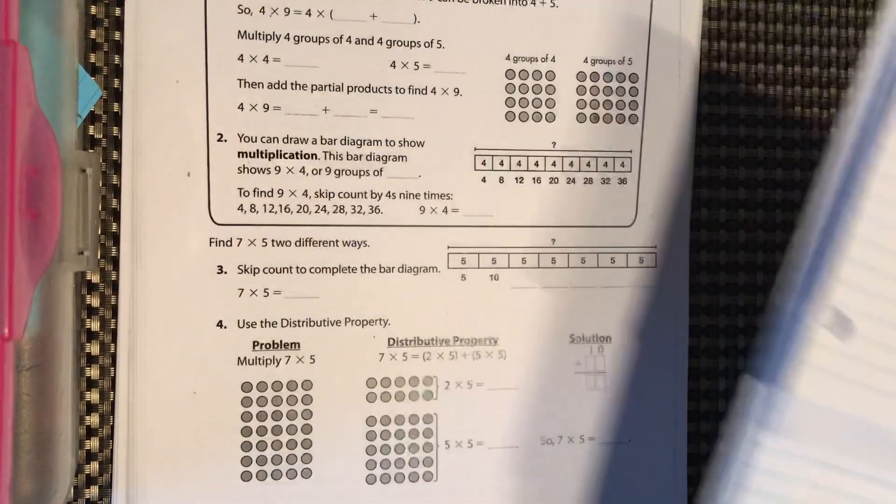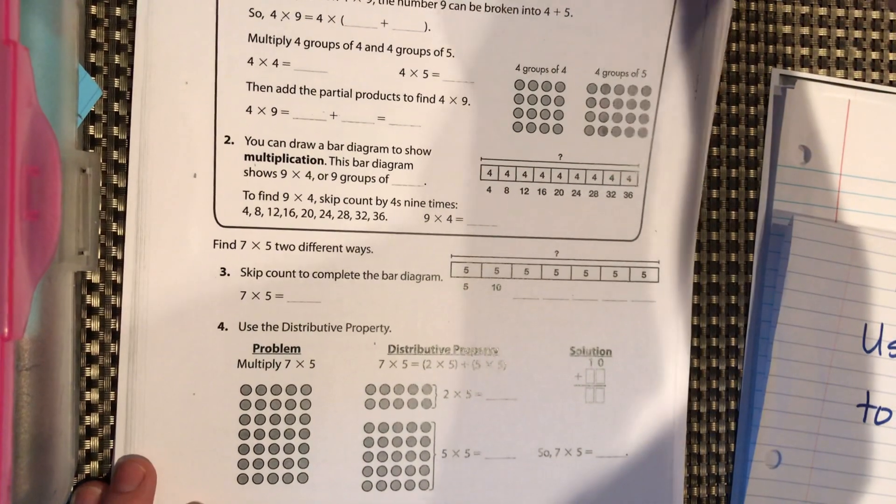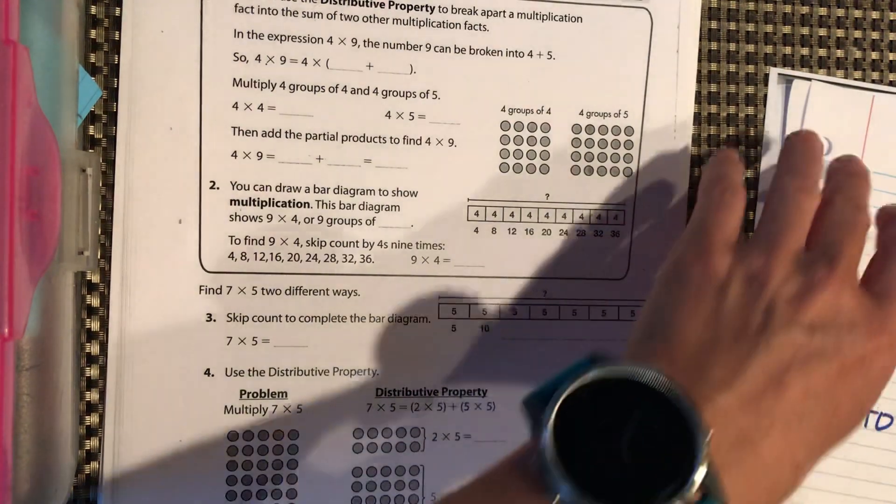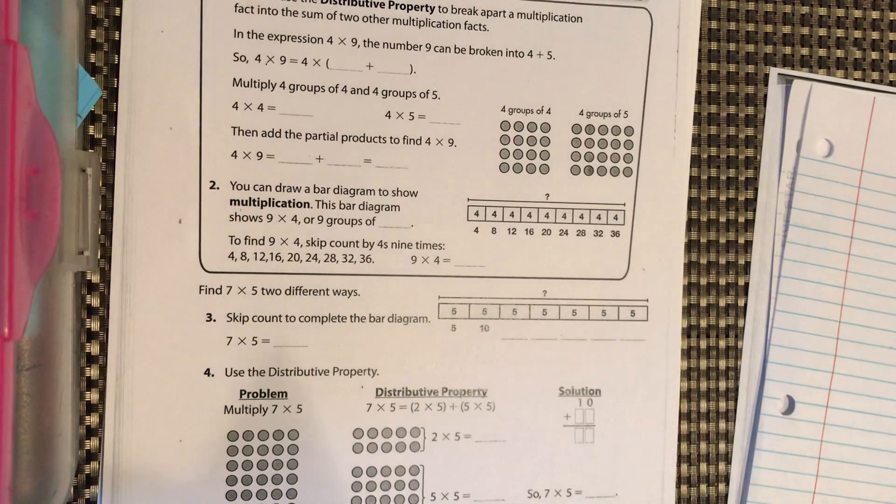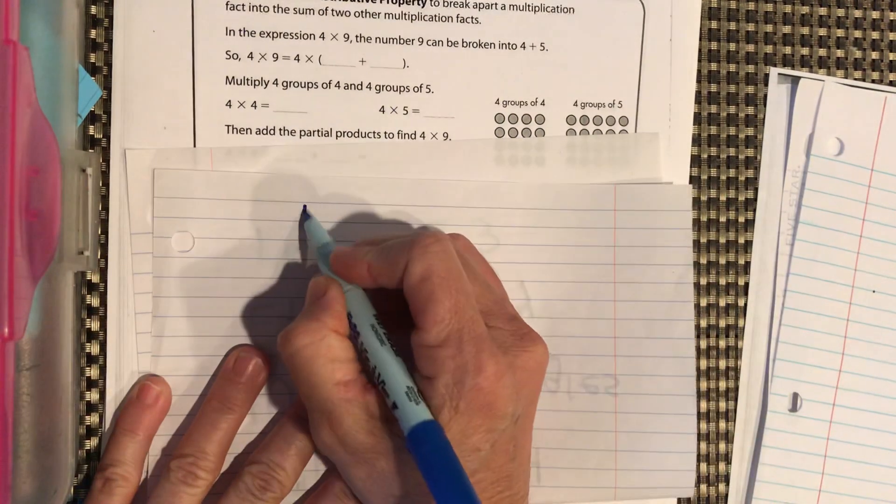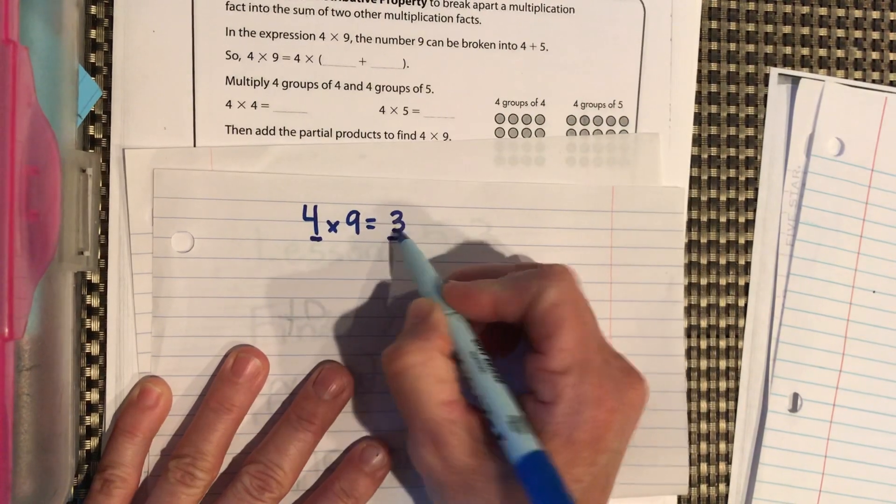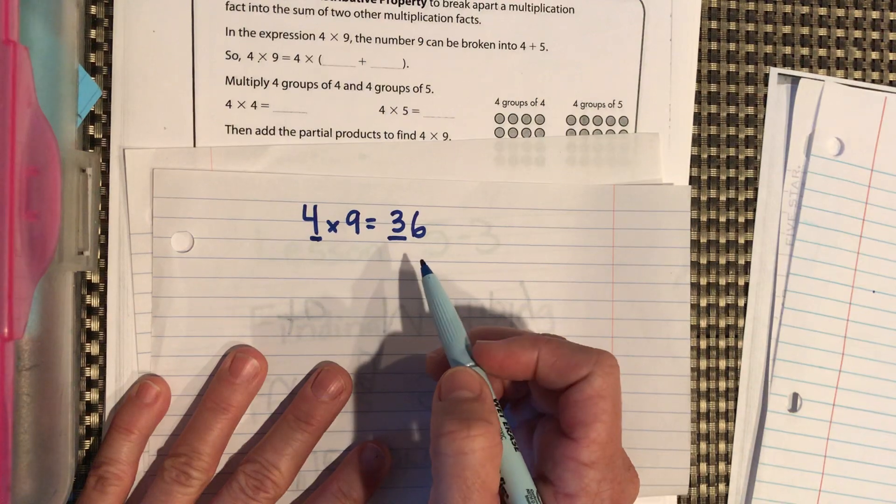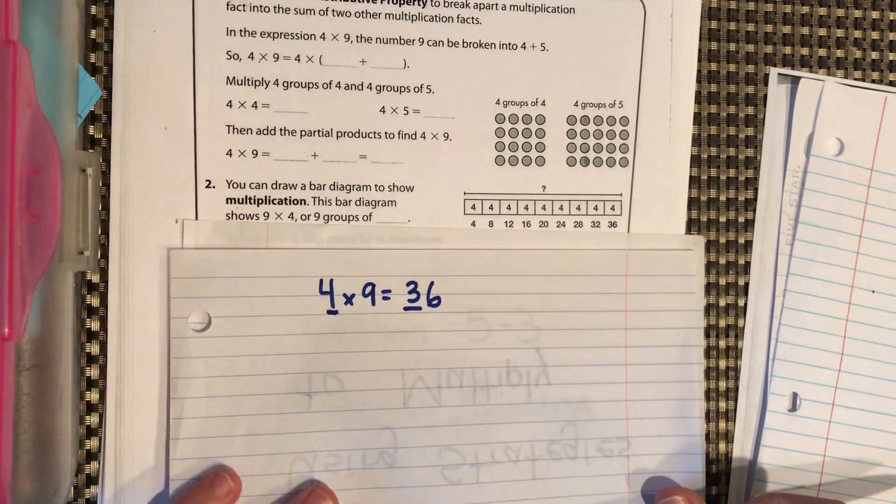Okay, so the first one here is going to start out with 4 times 9. Now, again, these are strategies we would use if we do not know how to find that number with our memorization. Or, for example, with the 9s, we have our 9s trick, right? So we have 4 times 9. We know the first number is 1 less than this, so that's a 3, and 3 plus 6 is 9. So if we know our 9 strategies, there is no reason to use the distributive property or a bar diagram to figure out 9 times 4.